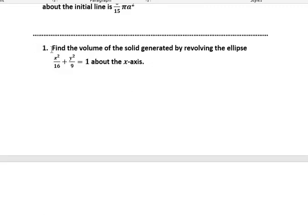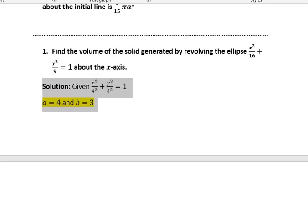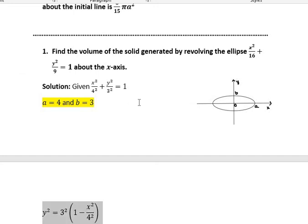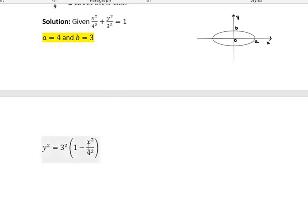We will work out Problem 1: find the volume of the solid generated by revolving the ellipse x²/16 + y²/9 = 1 about the x-axis. The given curve is x²/4² + y²/3² = 1. The standard equation of the ellipse is x²/a² + y²/b² = 1, so a = 4 and b = 3. Let us draw the diagram of the ellipse. Now let us take the given curve and equate that to y. So y² = 3² × (1 − x²/4²).